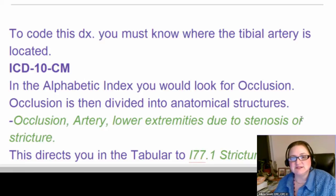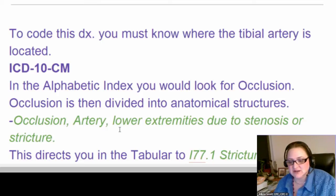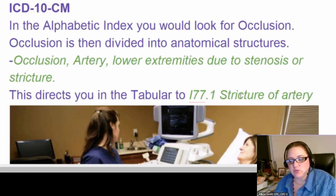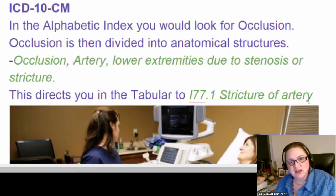If you don't know that the tibial artery is next to the tibia in the lower leg — which is a lower extremity — that's all you get. It's not going to give you any more information than that; it doesn't mention tibia at all, so you're stuck if you don't know that. It directs you to I77.1. When you get to this point, your code is I77.1, so you go look it up in the tabular and it's stricture of artery. It never once mentions the tibia — you just follow what the index says. Stricture of artery — that's the right code.